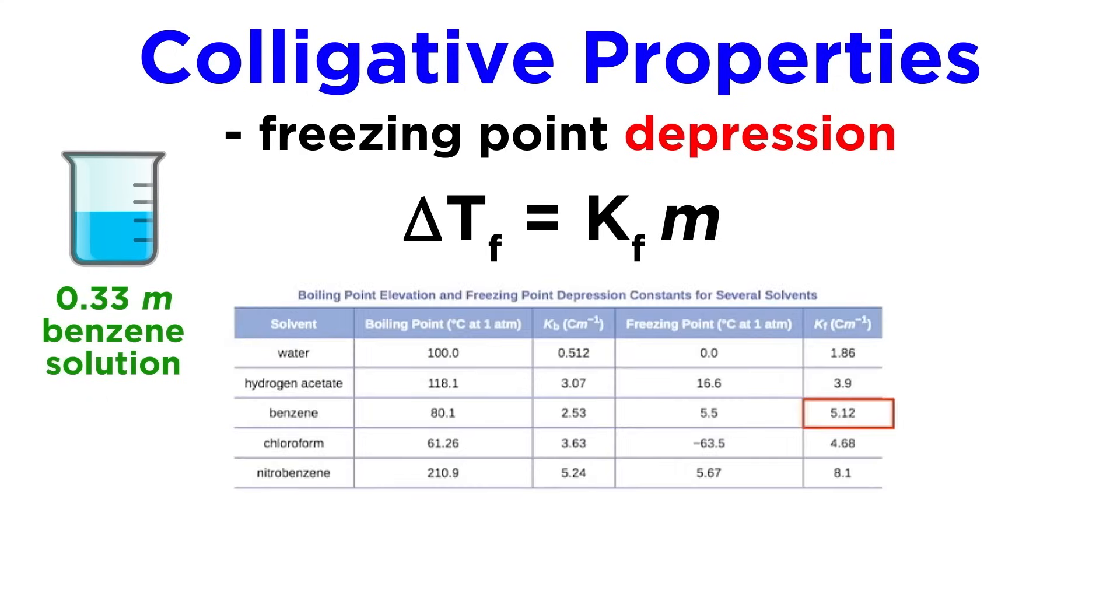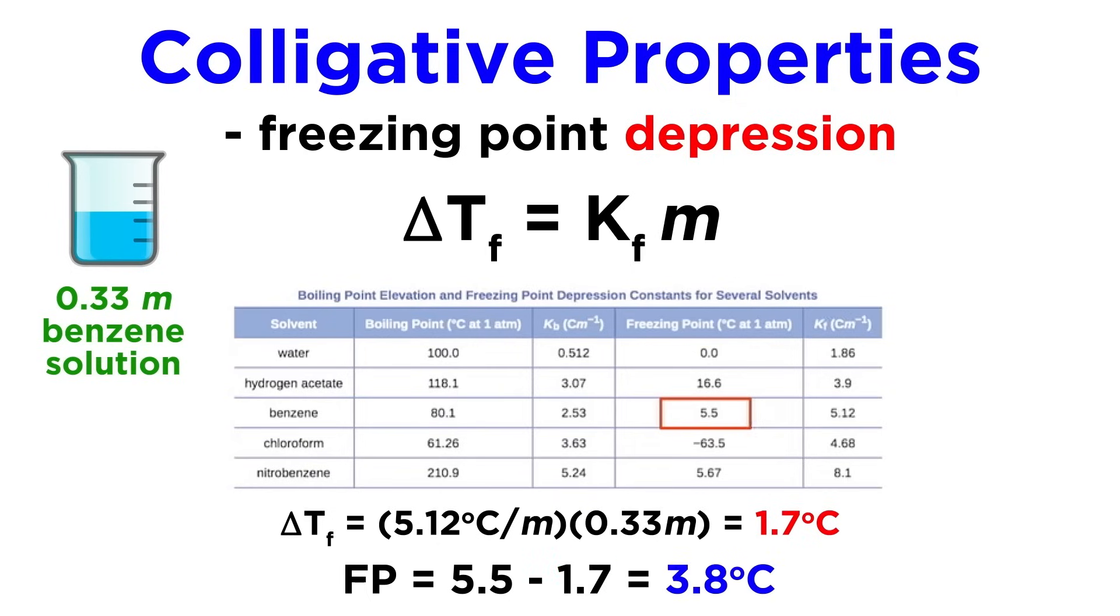Once again we can get the constant from this table and plug that into the equation along with the molality. That gives us a freezing point depression of 1.7 degrees. As we said, this must be subtracted from the normal freezing point. Let's refer to the normal freezing point of benzene and subtract our calculated freezing point depression, and we get that this solution should freeze at 3.8 degrees.